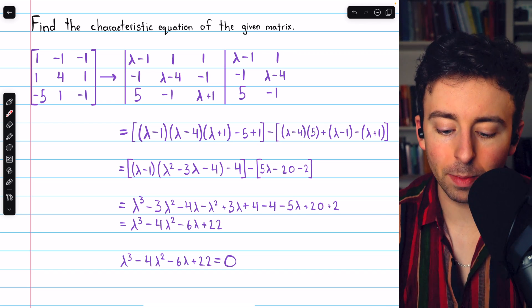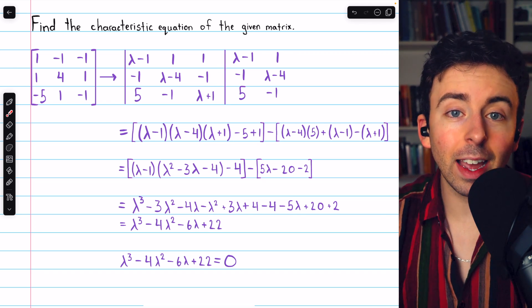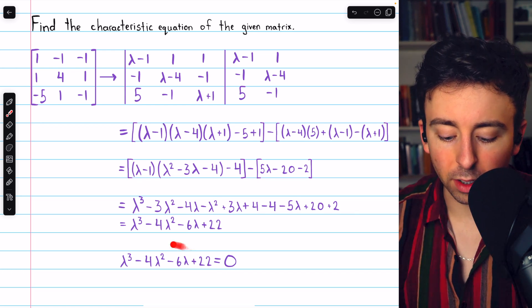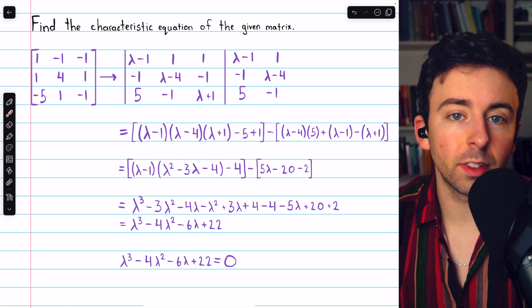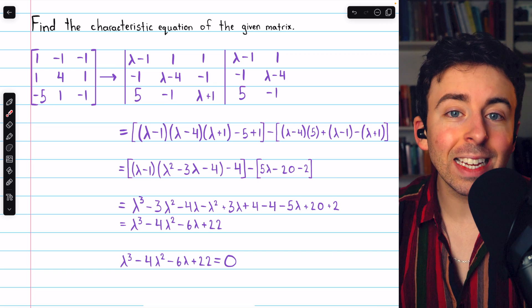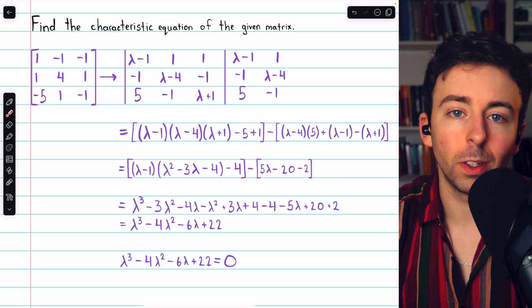It's the determinant of lambda I minus A set equal to 0. The solutions to this characteristic equation are the eigenvalues of the original matrix.